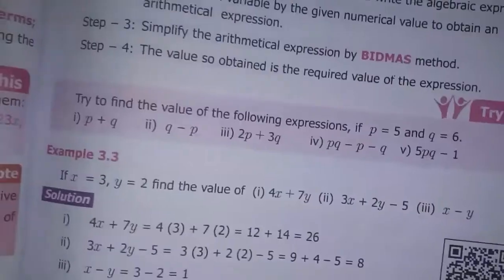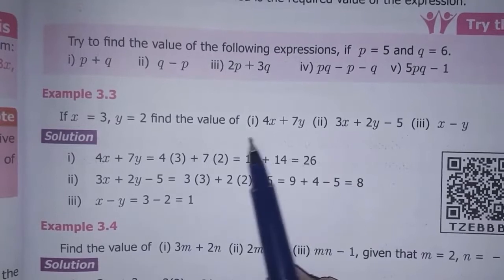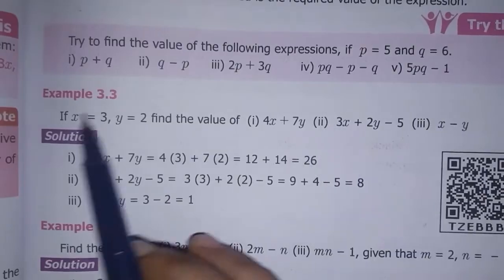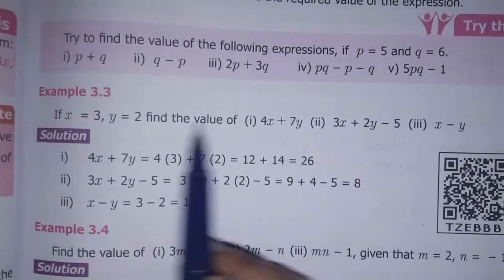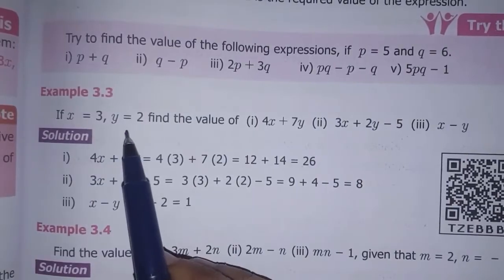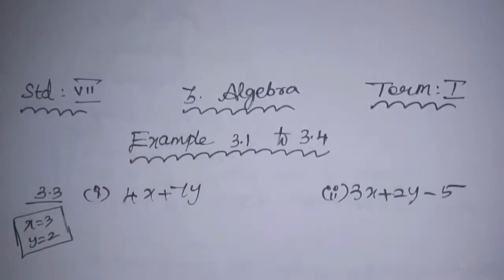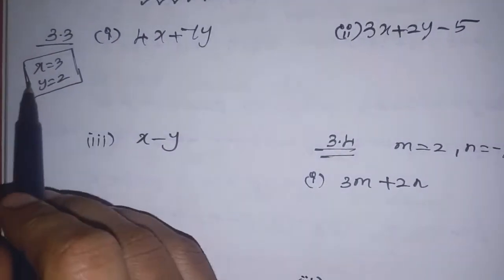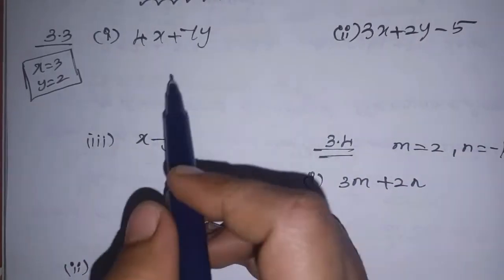Next example, example 3.3: If x is equal to 3 and y is equal to 2, find the value of 4x plus 7y, and 3x plus 2y minus 5. We substitute the given values into the expressions.